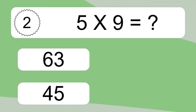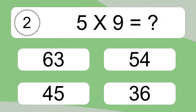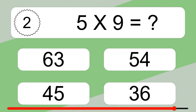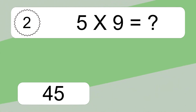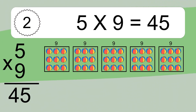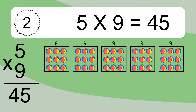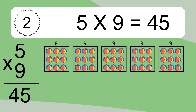5 times 9 equals what? 5 times 9 equals 45. We have 5 boxes, and each box has 9 colorful balls inside. If you count all the balls in all the boxes together, you will have 5 times 9 balls. This equals 45 balls.